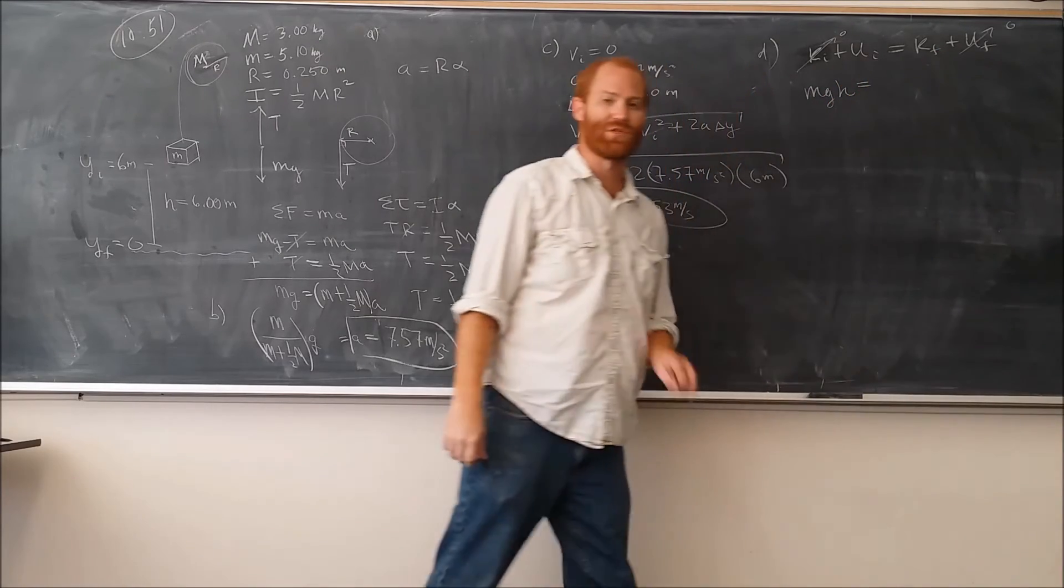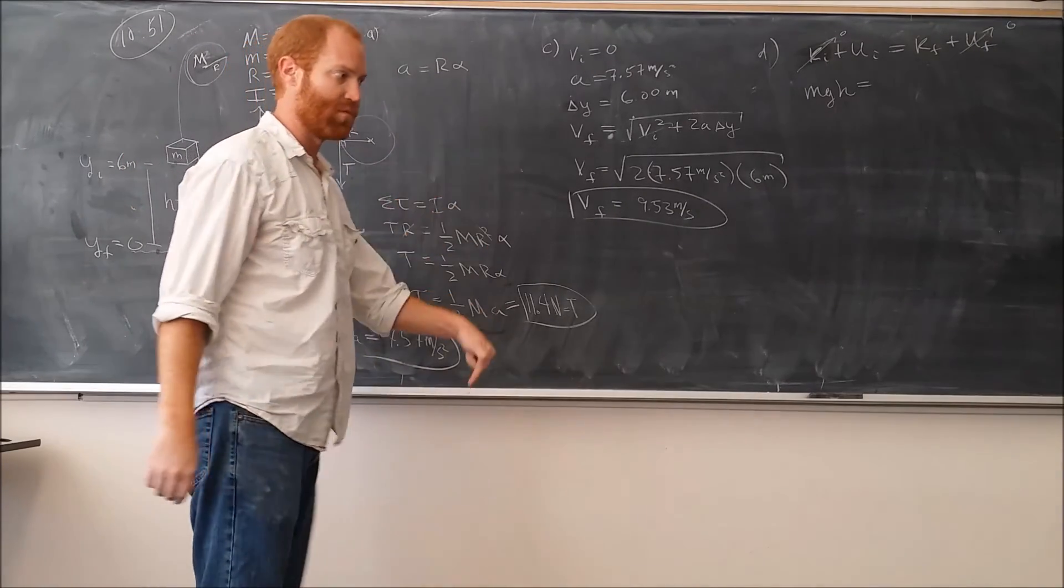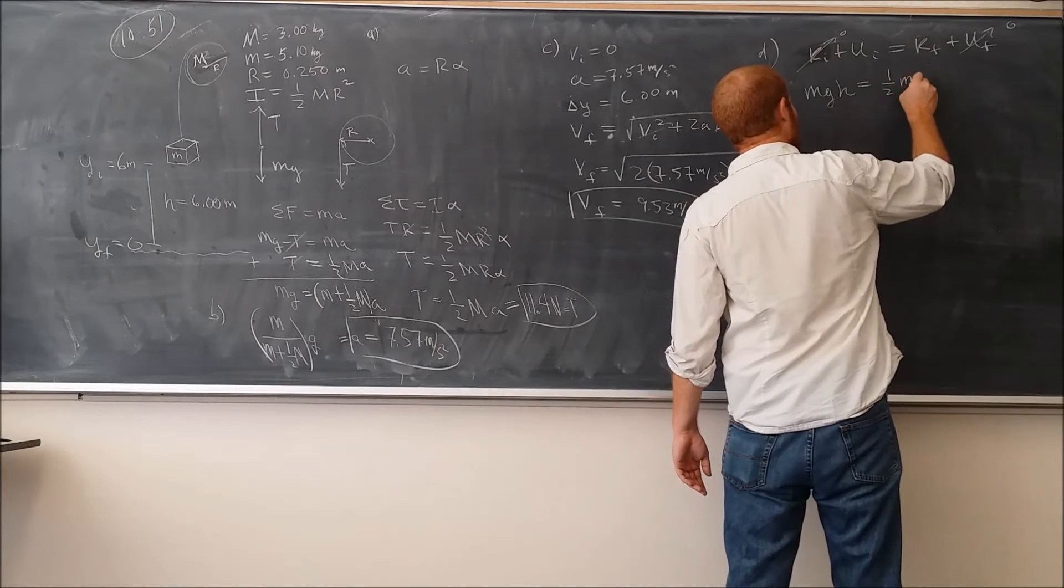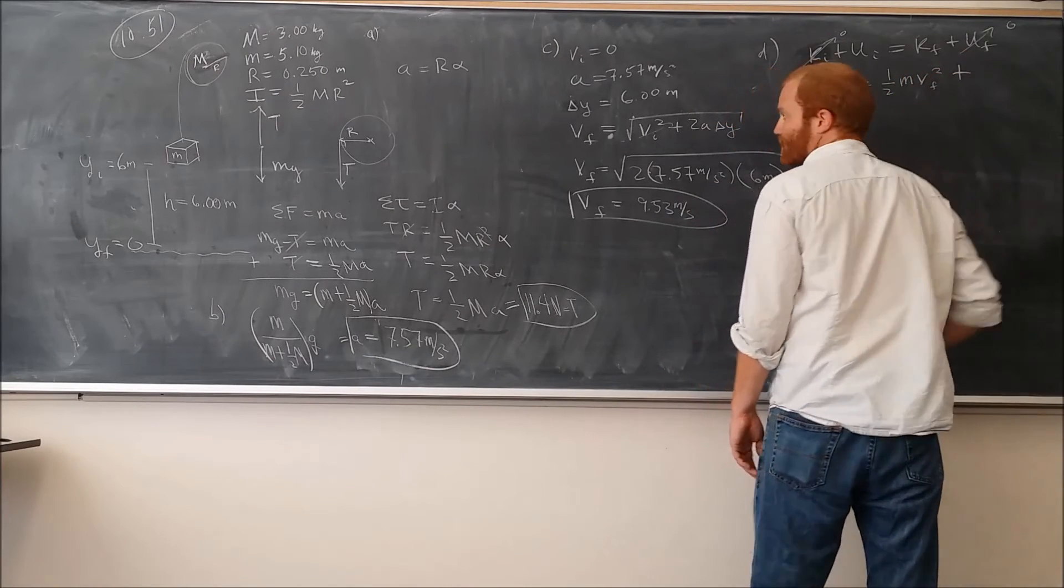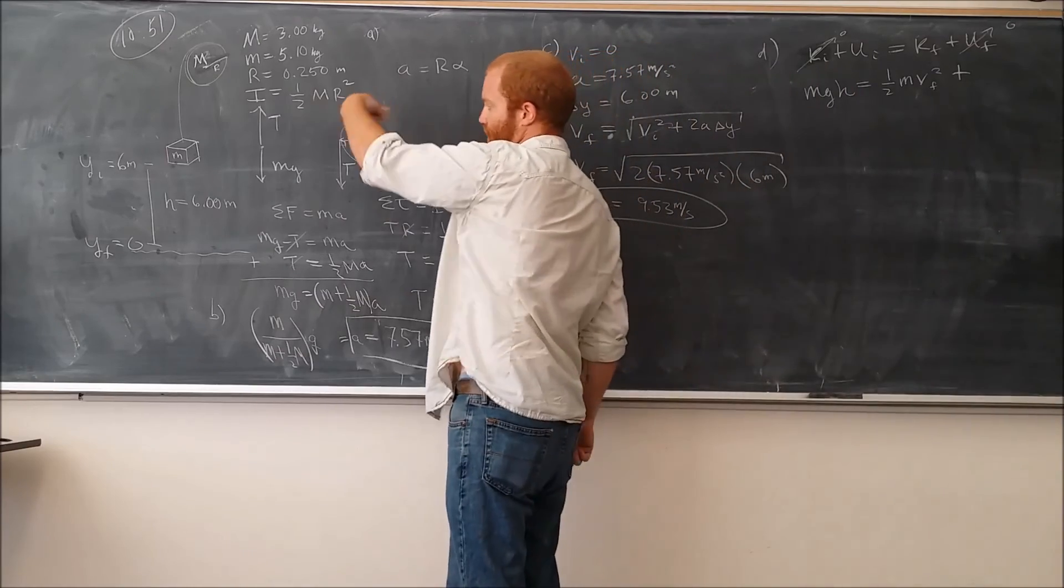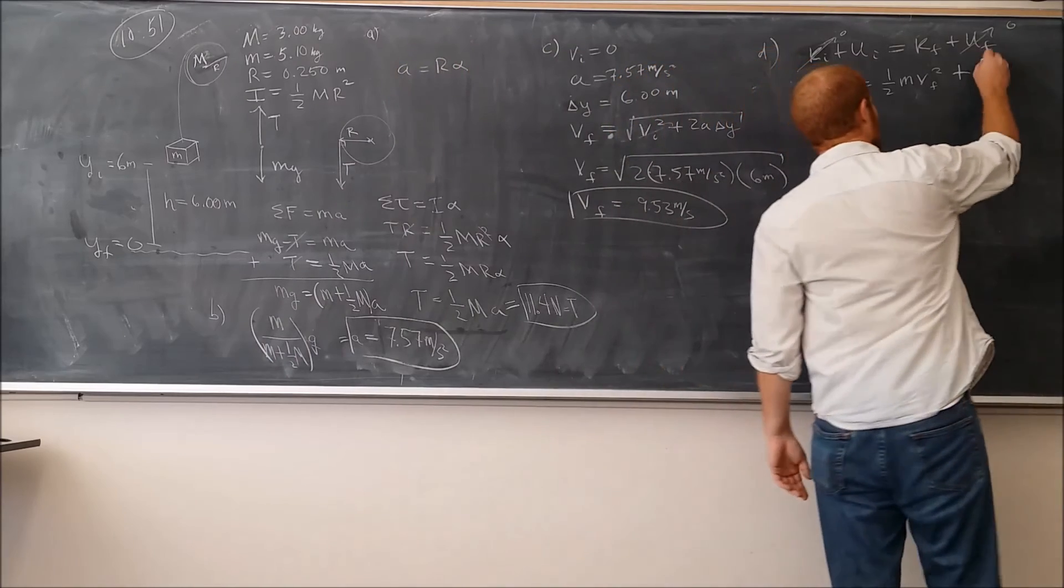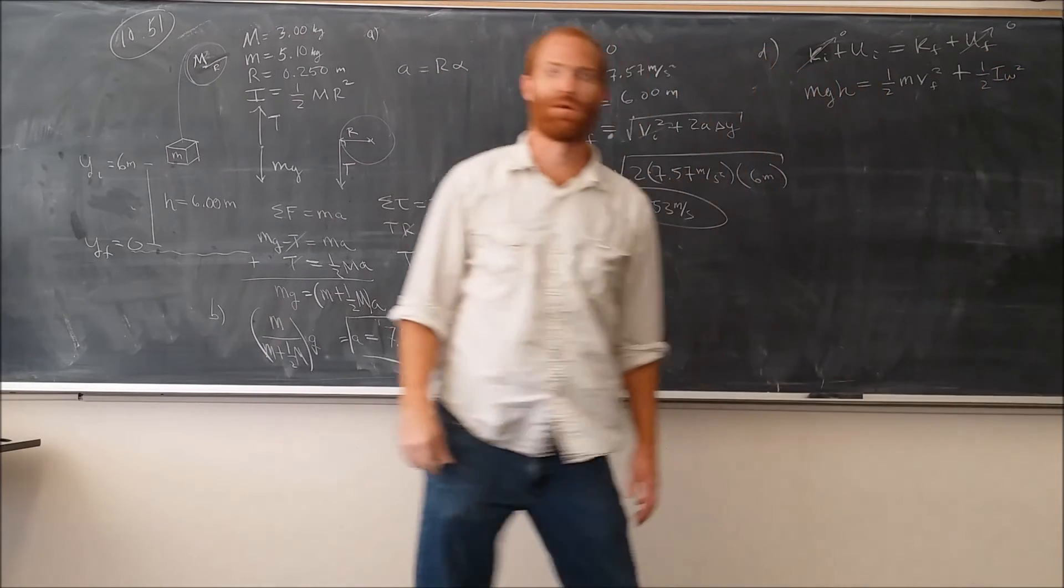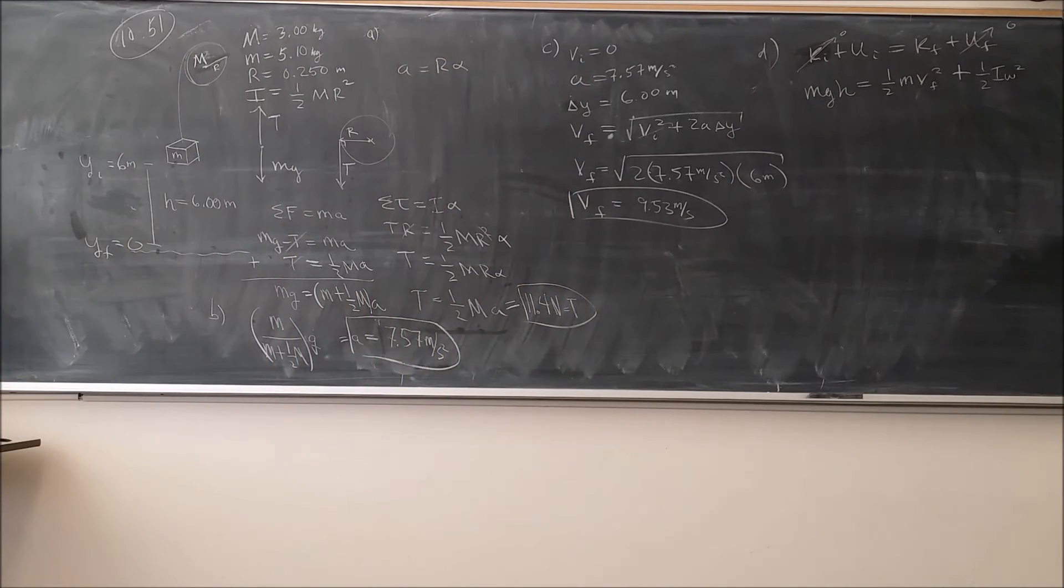The final kinetic energy, there's two different pieces of that. One of them is the fact that once this object gets down to here, it's going to be moving down with some velocity. We'll call it VF. Plus, this object here is going to be rotating with an angular speed. So we're going to say that it has rotational kinetic energy, which is equal to one half I omega squared.